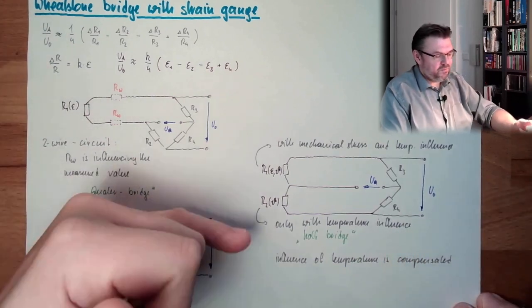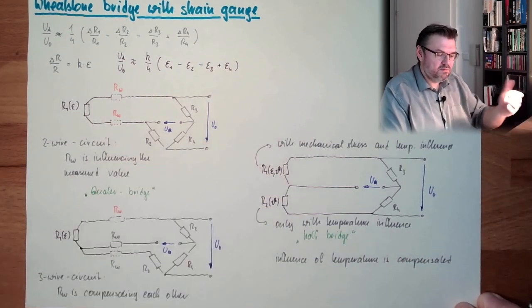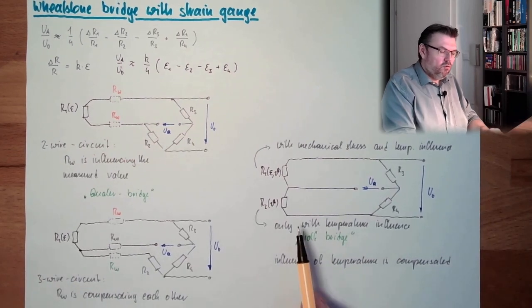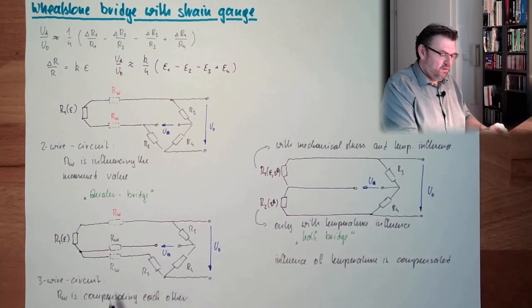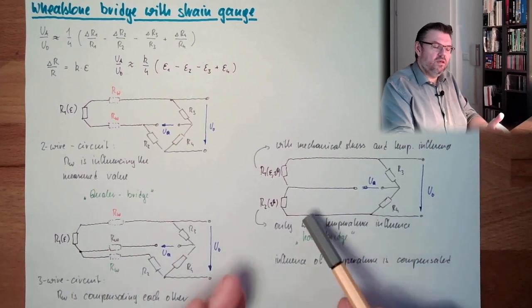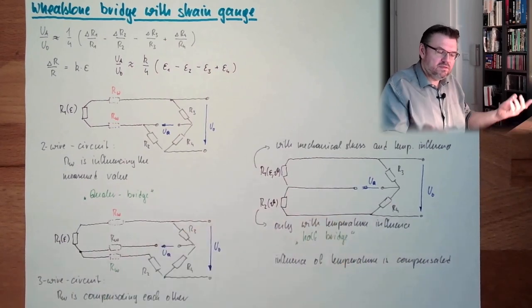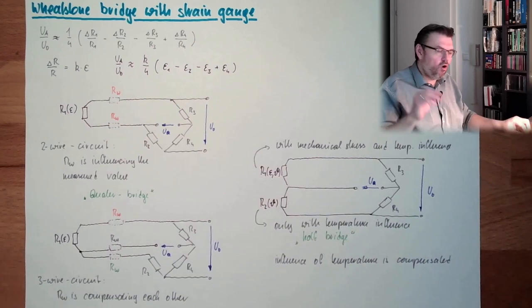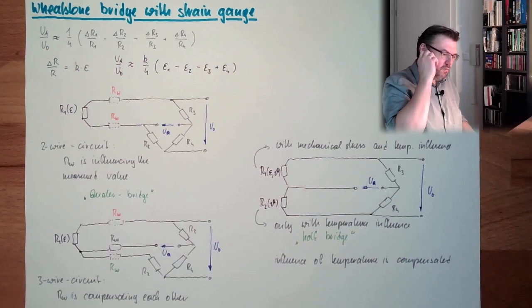Since R1 is in the positive branch and R2 is in the negative branch, they will compensate. And the wire effects are also compensated automatically, because we have two wires compensating each other.